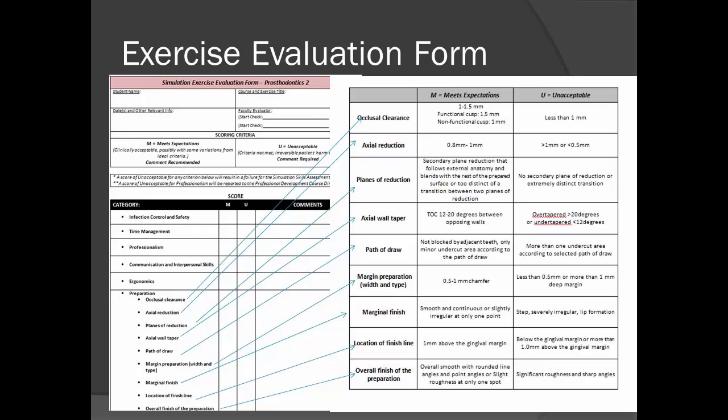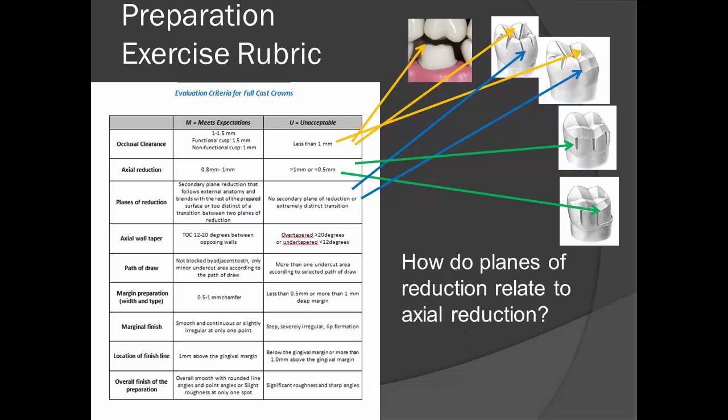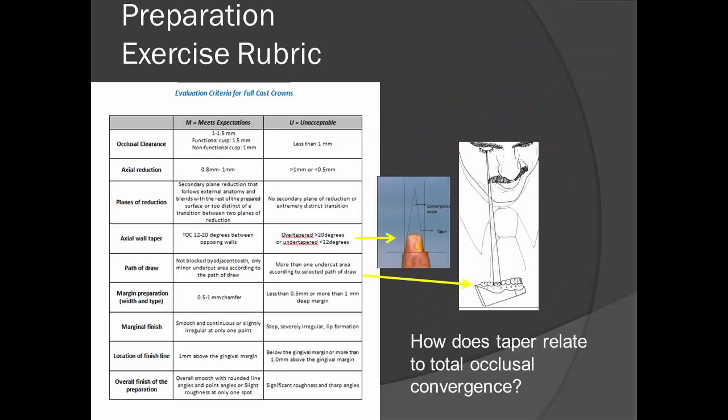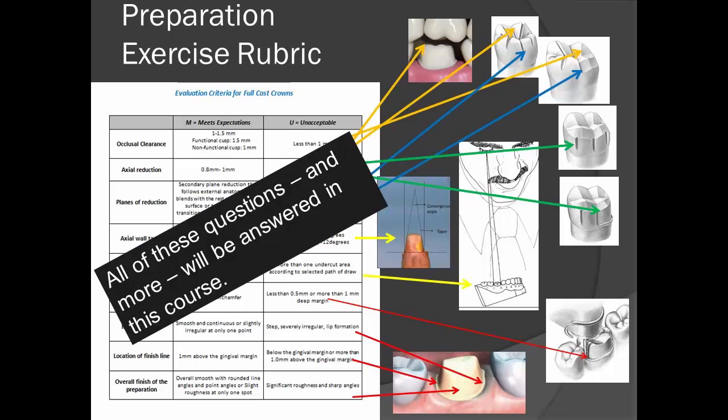Be sure that you understand all of the terms listed on the evaluation sheet. What's the difference between an occlusal reduction and occlusal clearance? How do planes of reduction relate to axial reduction? How does taper relate to a total occlusal convergence? What is the difference between a margin and a finish line? All of these questions and more will be answered in this course. Crown preparations will each have their own criteria for reduction, taper, and margin type. Be sure you consult the rubric for the assignment that you are currently working on.